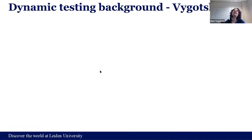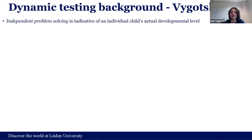Dynamic testing is the instrument we use to assess children's potential for learning, and it is basically based on Vygotsky's theory of the zone of proximal development. The idea is that learning never takes place in a vacuum — learning is a social construct. Learning is something we do with and from other people who are very often experts in that specific task we're learning.